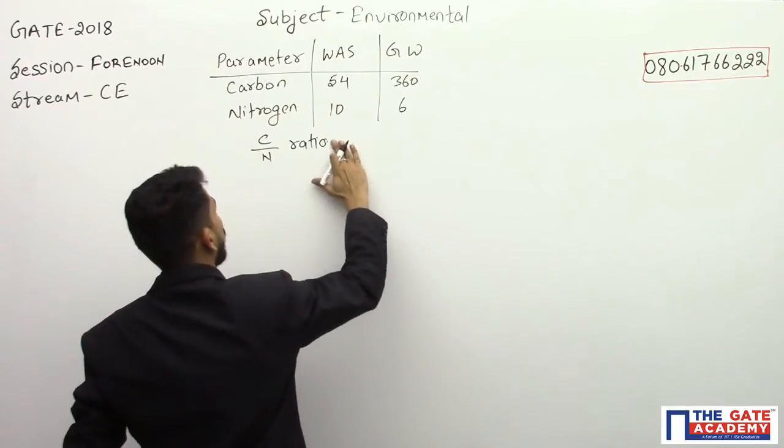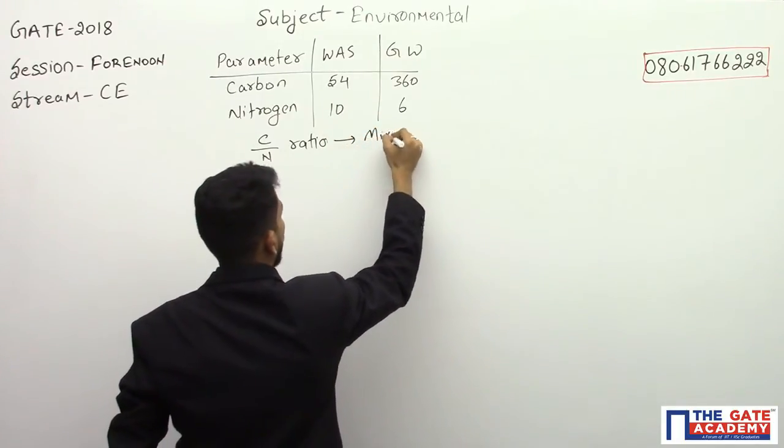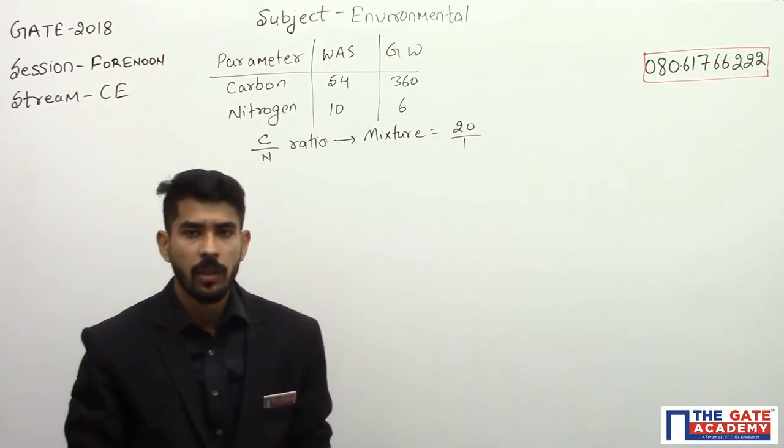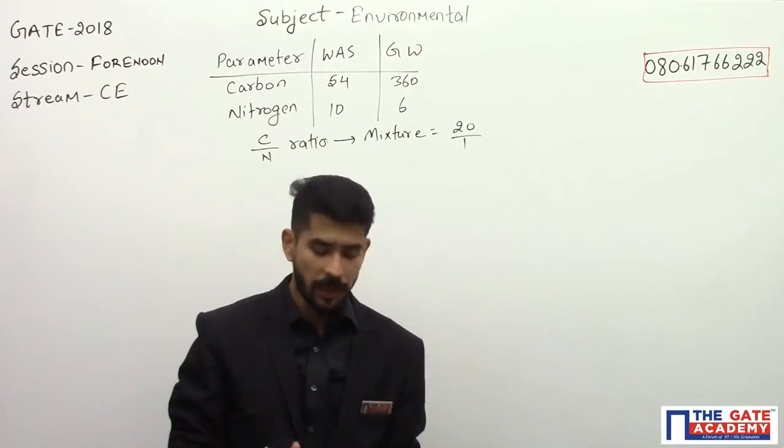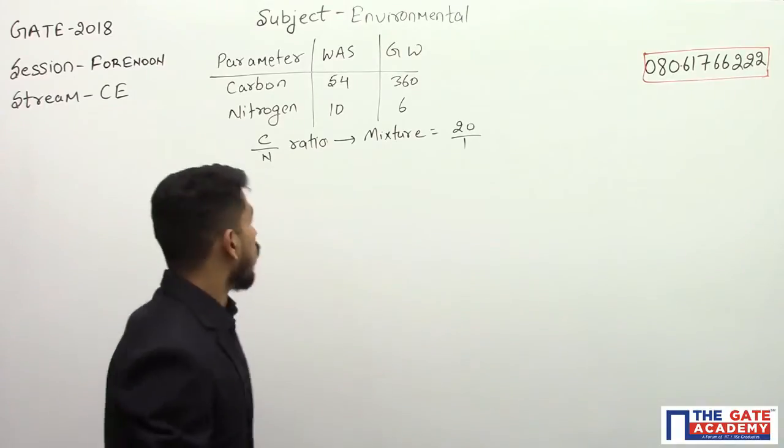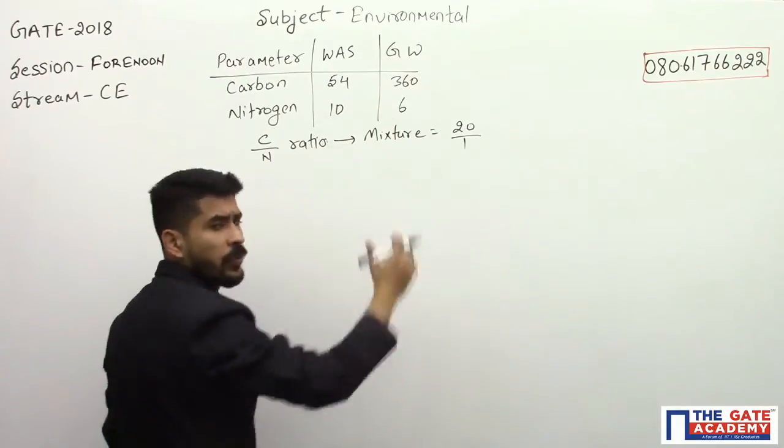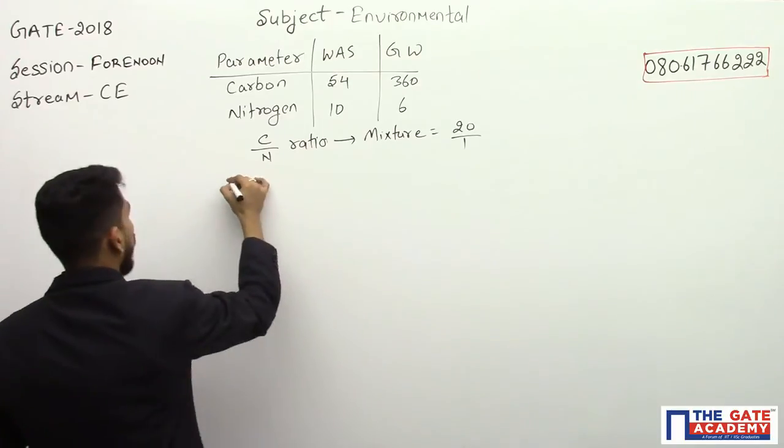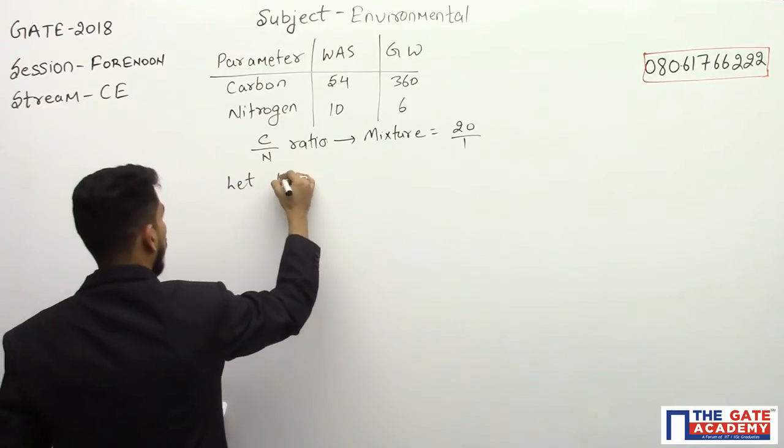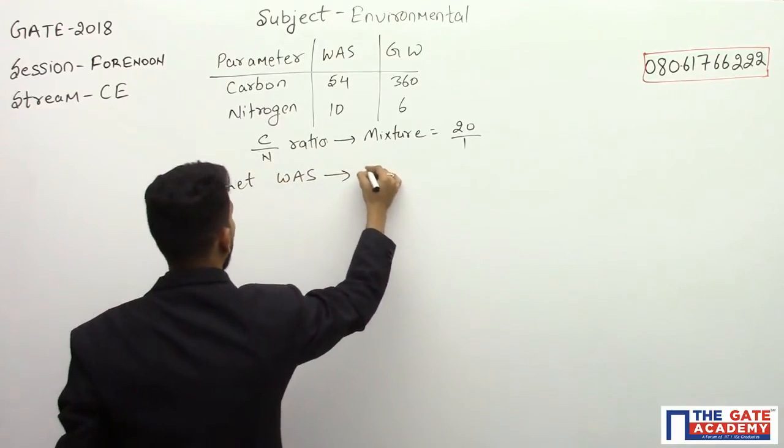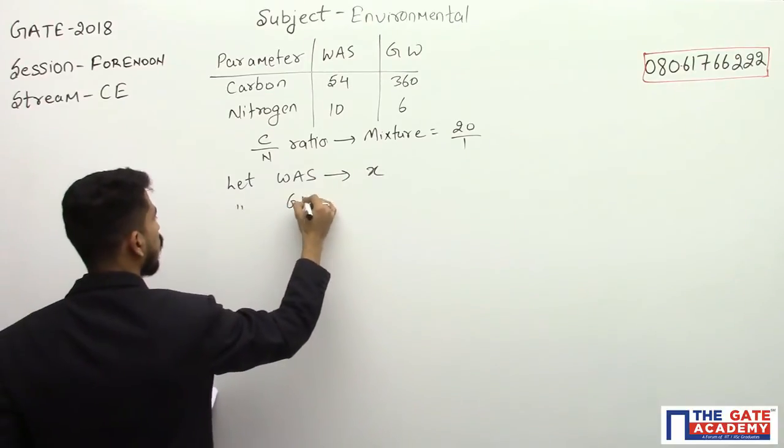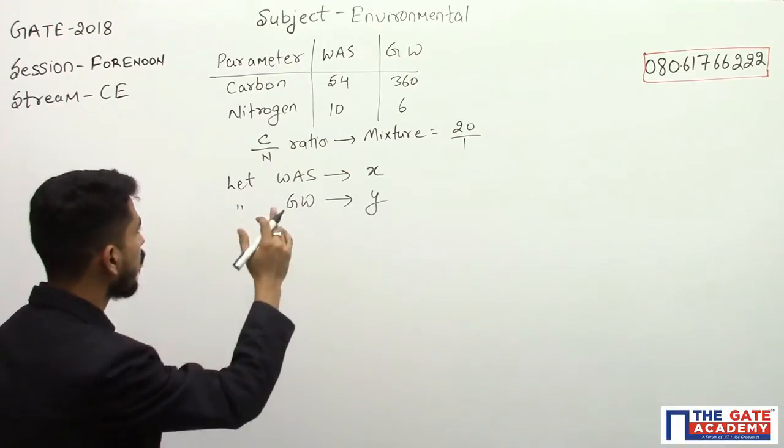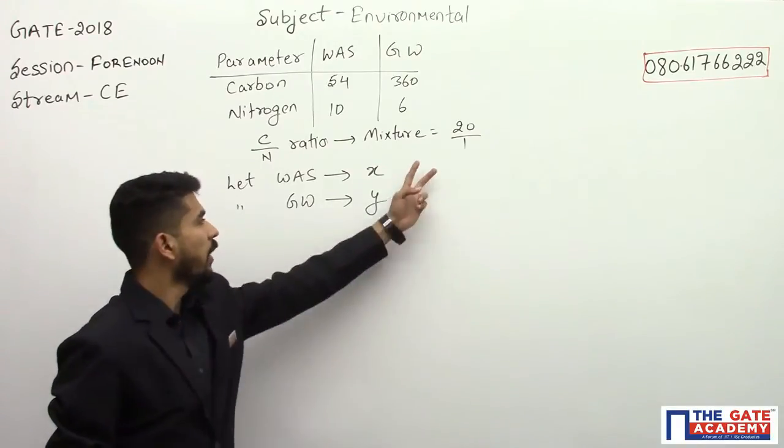Let us solve this equation. We have to calculate how much content of these two we need to take to get an effective ratio of 20 is to 1. Let WAS be X and let GW quantity be equal to Y. The mixing of these two leads to a C by N ratio of 20 is to 1.